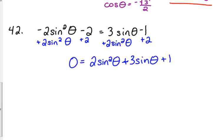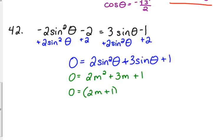This is different factoring than the previous problem — that was a GCF. We can't do a GCF here because it's a trinomial. Sometimes it helps to temporarily substitute for the trig function. Let's put an M in there instead of sine of theta — it helps people see the factoring without the trig in the way. All I've done is substitute M for sine of theta. That allows me to factor: two M plus one times M plus one.